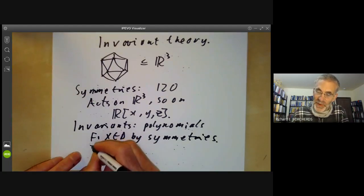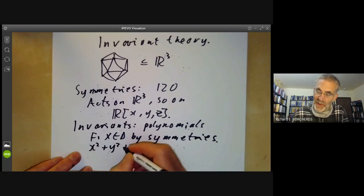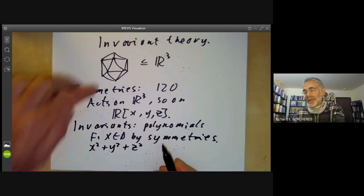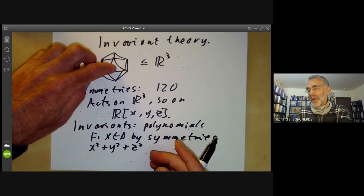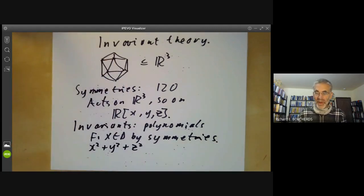Well, there's an obvious invariant, which is just x²+y²+z², assuming you put the origin at the center of the icosahedron. And if you put the origin anywhere else, you'd be being pretty stupid. This is an invariant because it's basically just the distance or distance squared.